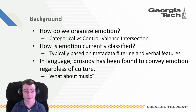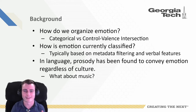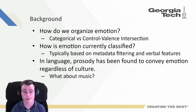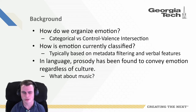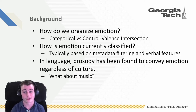Let's provide some background to this problem. How is emotion currently organized? There are two main approaches. First is the categorical, where we put each emotion in its own bucket, such as a bucket for happiness and a bucket for sadness. Or there is the continuous model, which represents emotion as the intersection between the two continuous variables, control and valence. But how is emotion classified currently? Current emotion classification models are usually based off metadata filtering and on verbal features. In language, prosody has been found to convey emotion, regardless of culture. But what about music?